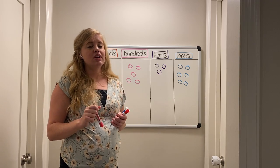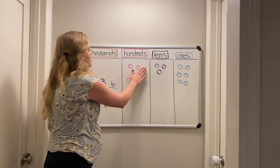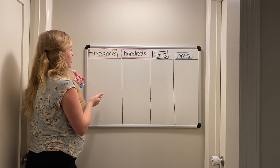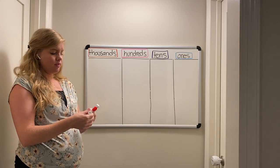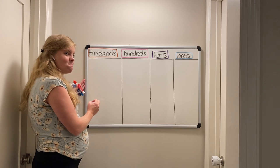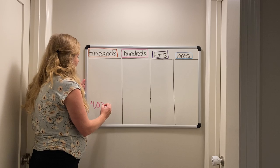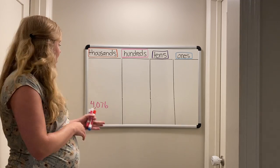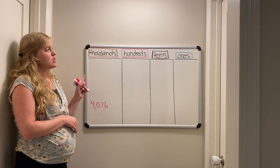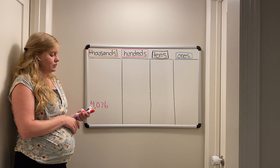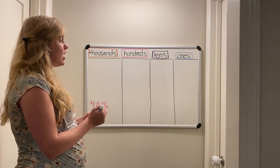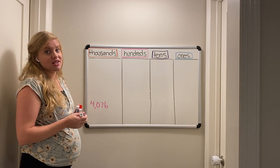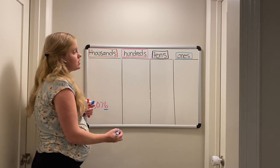Now I'm going to test you with a four-digit number. A four-digit number means we need the thousands place. How about four thousand seventy-six? Go ahead, pause your device and write four thousand seventy-six in your place value chart. Welcome back! I hope you have a lot of dots or shapes on your whiteboard. We start in the ones — there's a six in the ones place, so we have six ones.